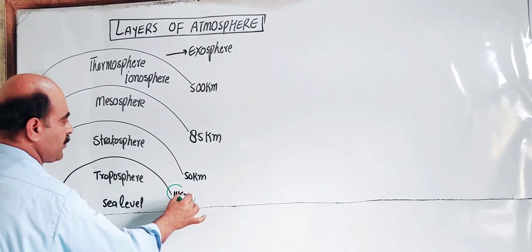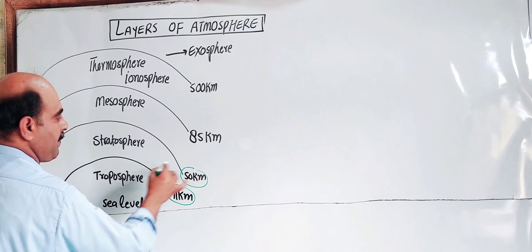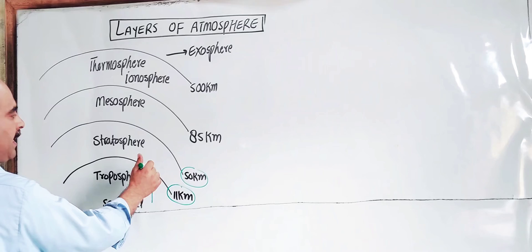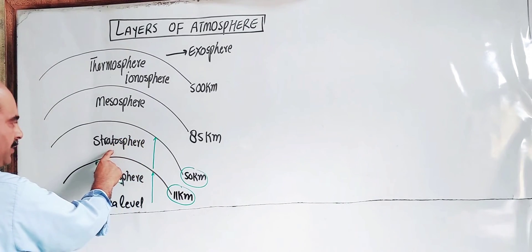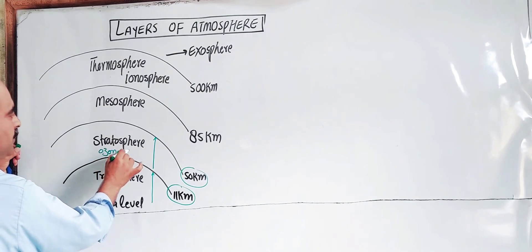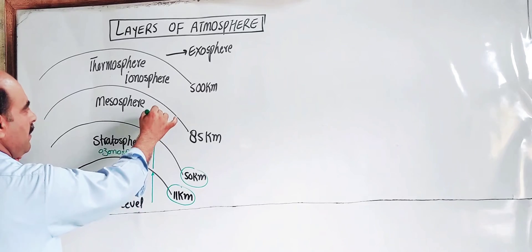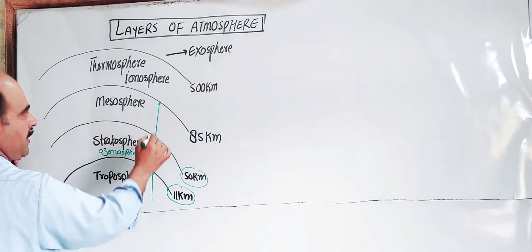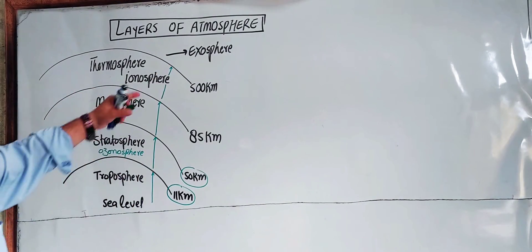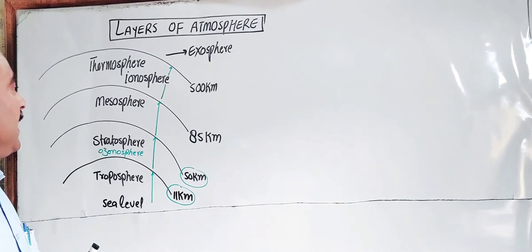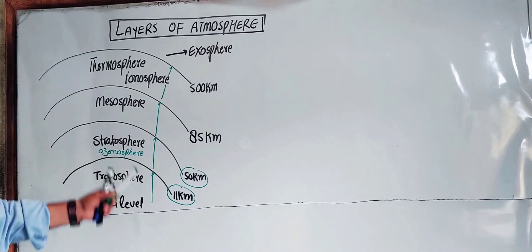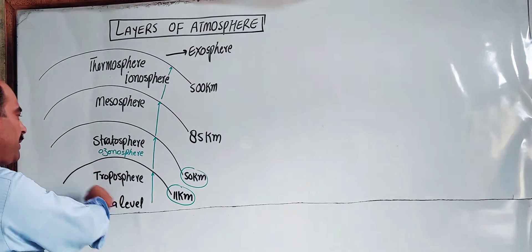To summarize: the main spheres arranged by scientists are — 0 to 11 km: Troposphere; 11 to 50 km: Stratosphere, which contains the ozone layer; 50 to 85 km: Mesosphere; 85 to 500 km: Thermosphere, which includes the Ionosphere. Each layer has its own characteristic properties which I will discuss one by one.